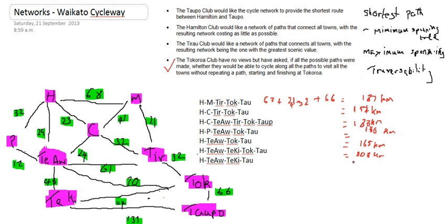And last but not least, the Tiawamutu, Tukiti, Taupo route is 183 kilometres, and the other is 208 kilometres. Therefore, my best route is the one that goes Hamilton, Cambridge, Tyrell, Tokaroa and Taupo. That has the shortest route between Hamilton and Taupo of 157 kilometres. So that's my second part done.